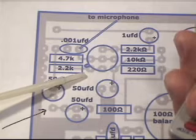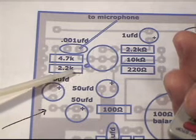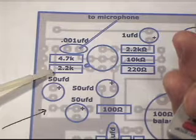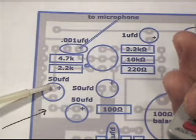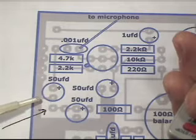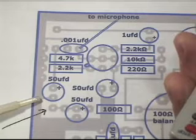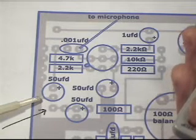The component location print shows the emitter coming down with a track underneath the 2.2K resistor, turning up here, going to the 50 microfarad, and the other side of the 50 microfarad goes to ground. That will put that emitter at AC ground. So let's take a close look at the board and see if that's really what's happening.